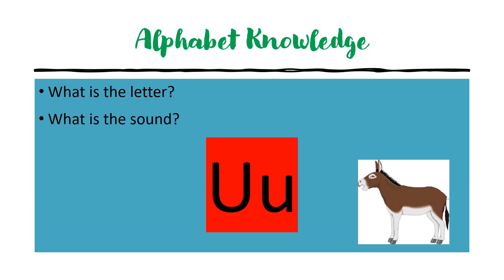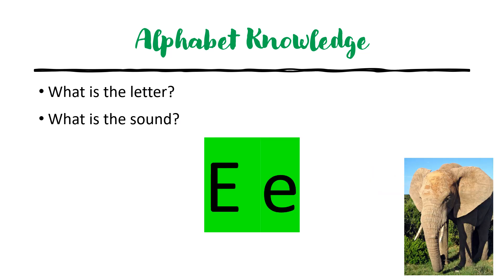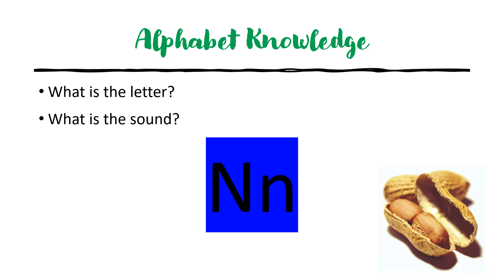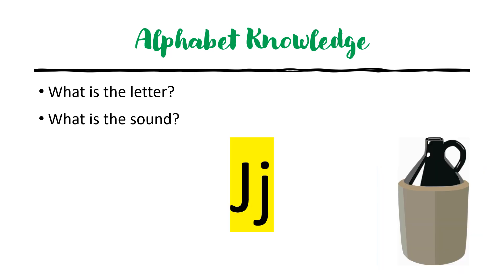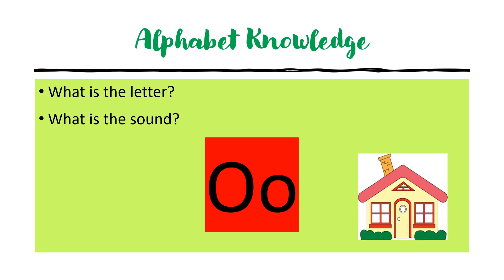What is the letter? U. What is the sound? U. What is the letter? E. What is the sound? Eh. What is the letter? N. What is the sound? N. What is the letter? J. What is the sound? J. What is the letter? O. What is the sound? O.